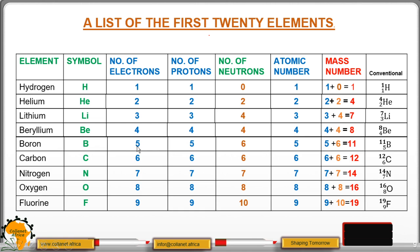For boron, which is number 5, symbol capital B, then carbon, then nitrogen, oxygen, and fluorine — all these will be computed the same way. You add the number of protons to the number of neutrons to get the mass number. The mass number is usually the superscript, while the atomic number is the subscript.